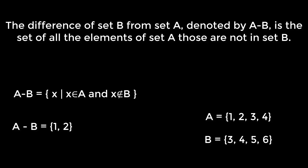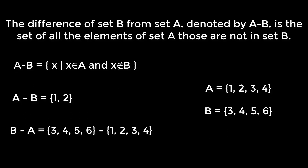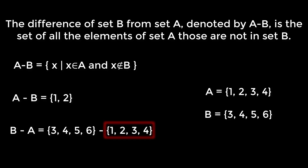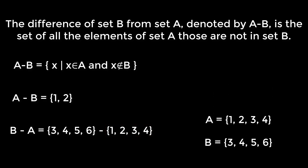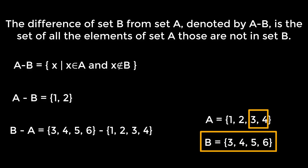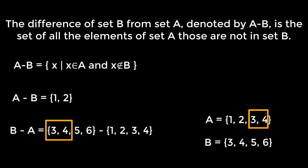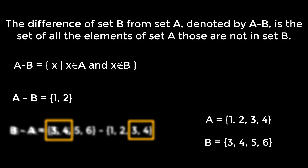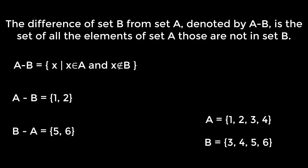Let's see what happens if we take B difference A. B difference A is the difference between the set {3, 4, 5, 6} and {1, 2, 3, 4}. This time we are going to remove elements from B which are also present in A. Here 3 and 4 are in B and also in A, therefore 3 and 4 will be removed from B. Then B difference A is the set {5, 6}.